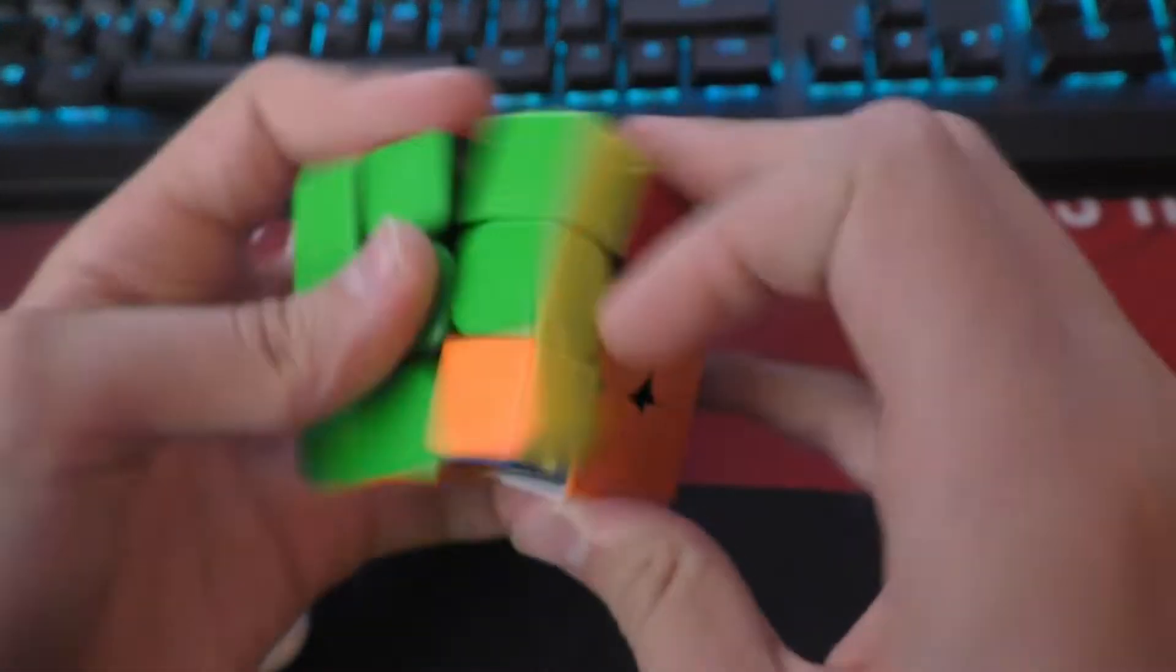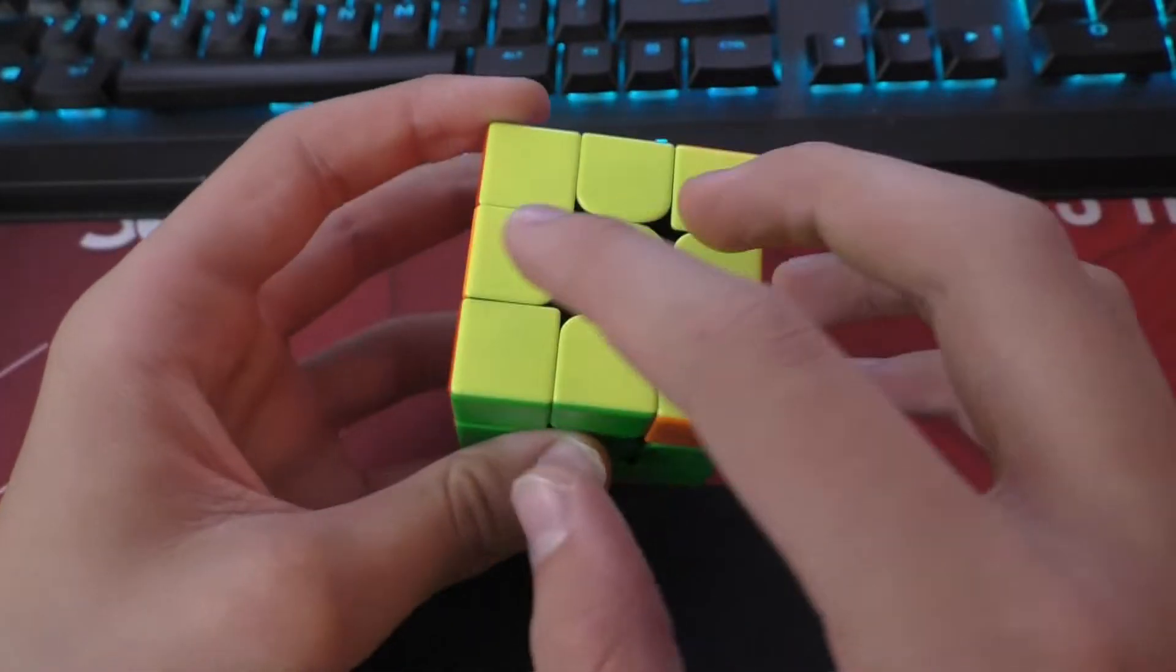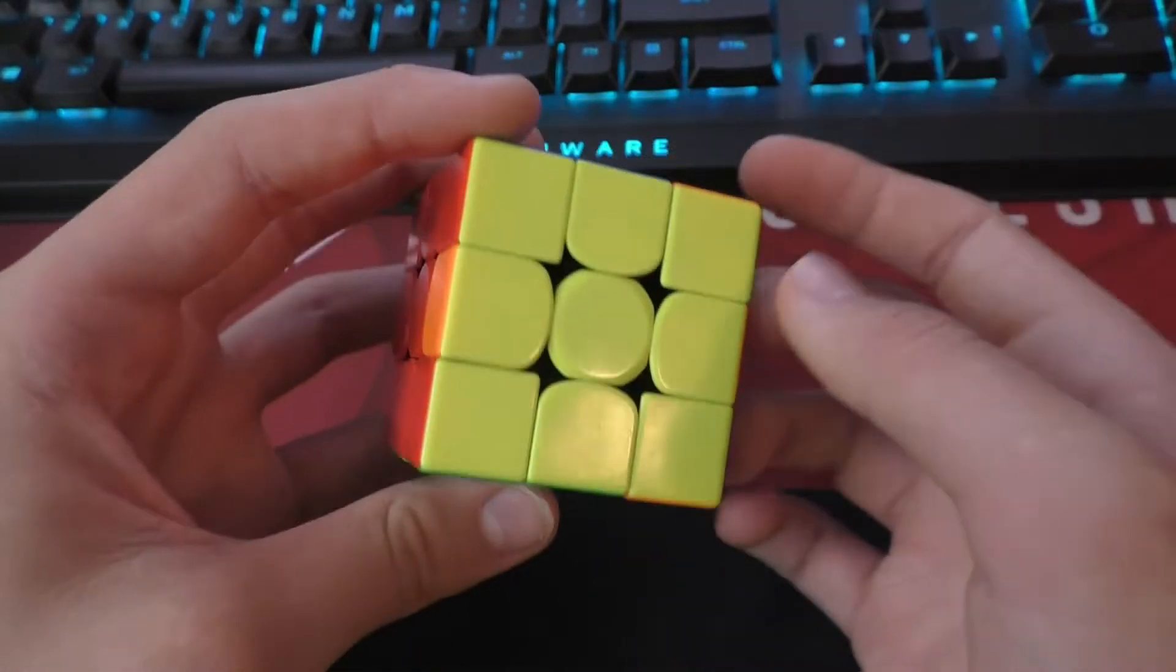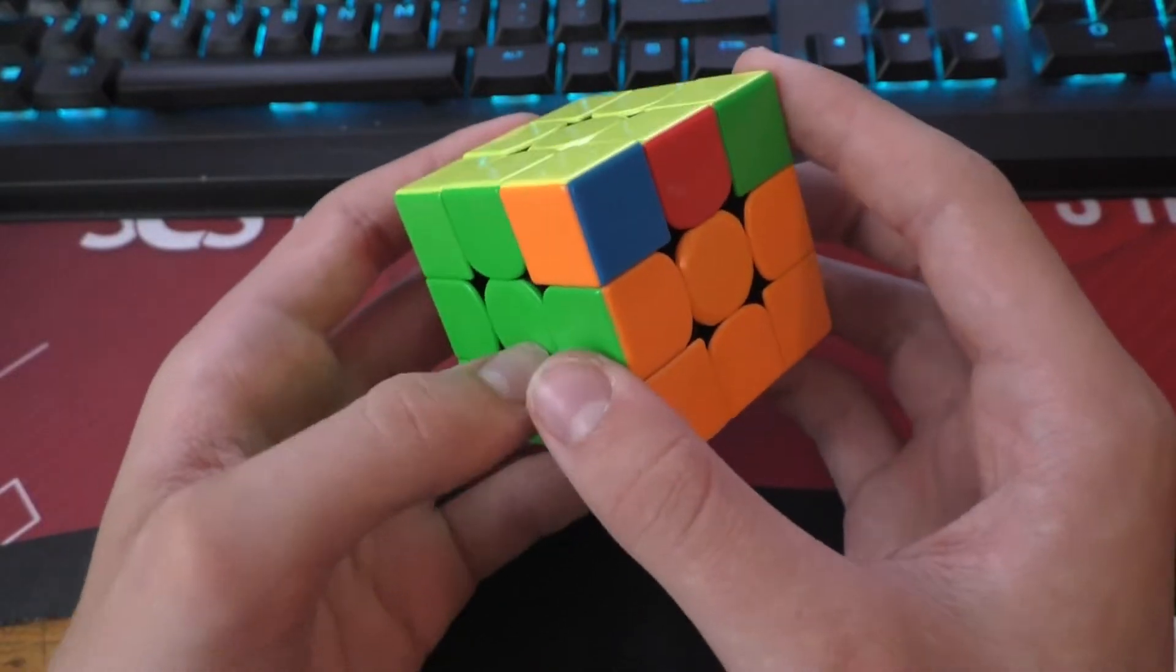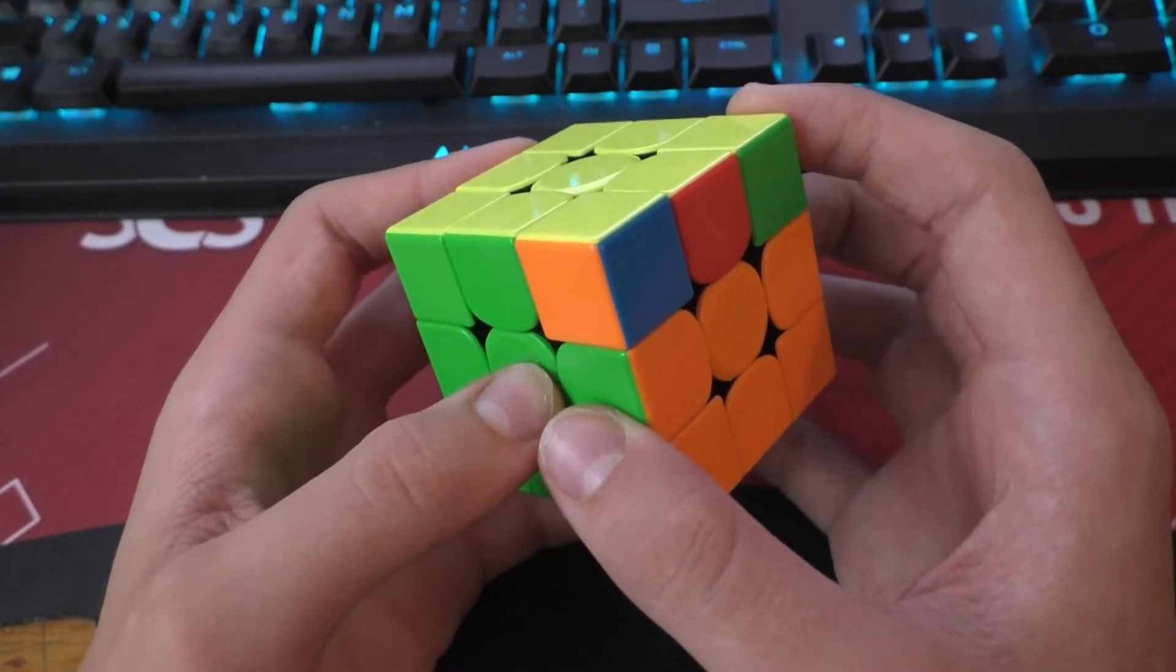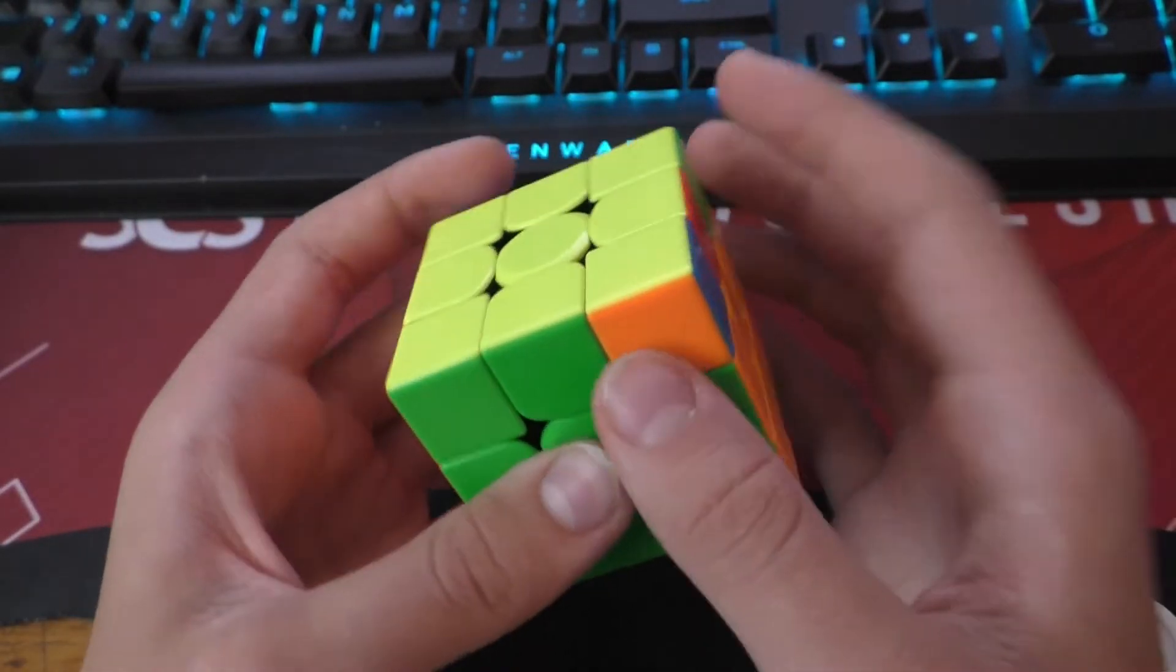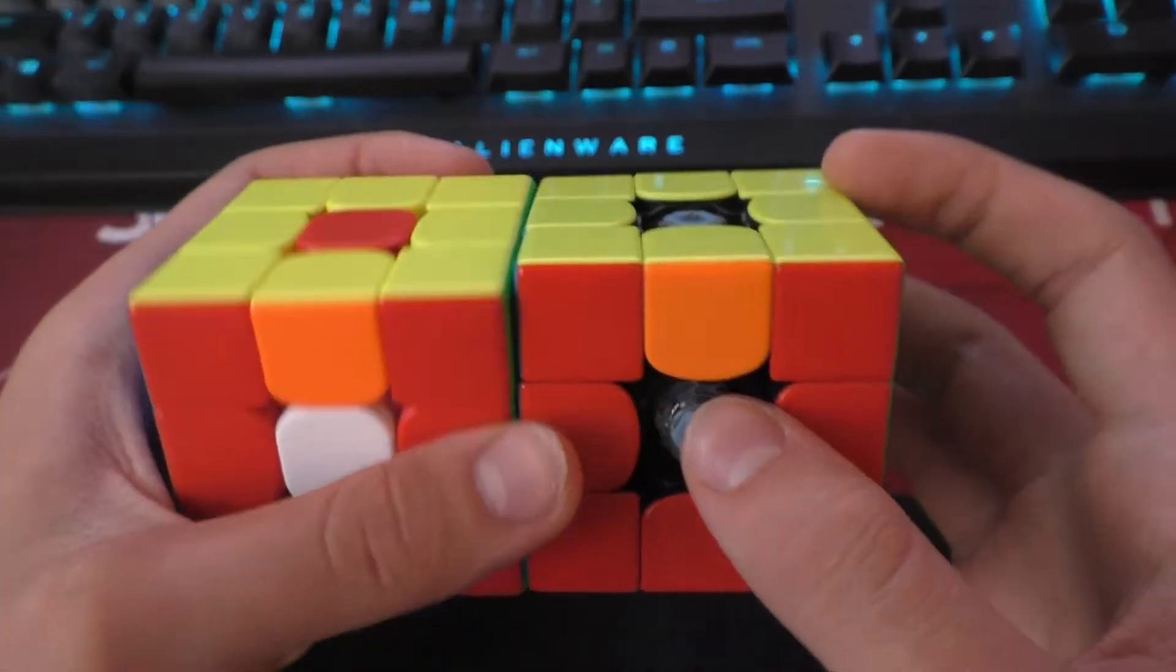Another example of this could be the T-perm. Technically, a T-perm is just edge parity and corner parity. It has two corners swapped and two edges swapped. But technically, since you have two parities, they just cancel out and the cube is solvable, because this is a T-perm and you can just solve it like a T-perm.